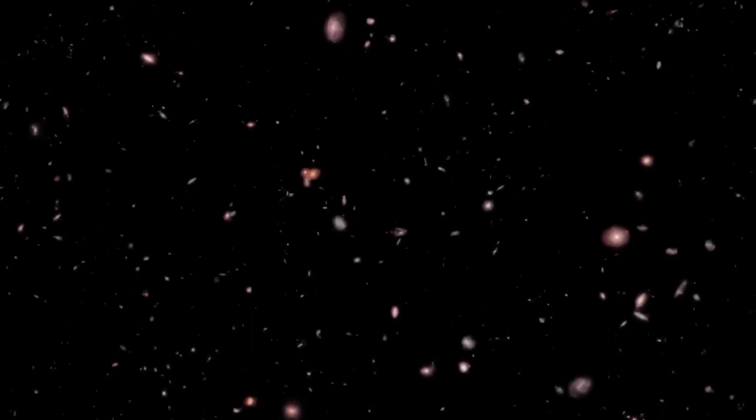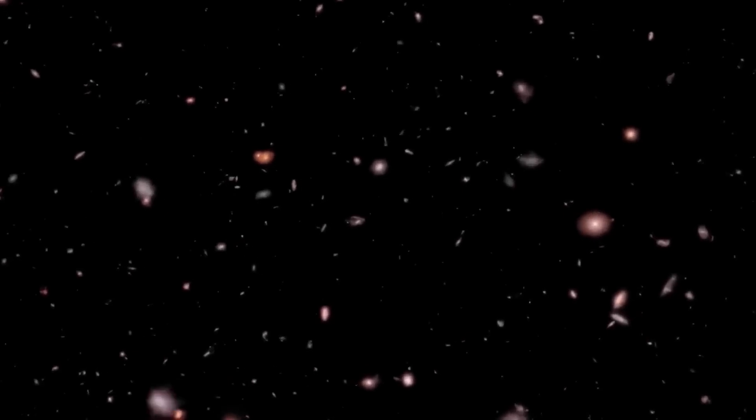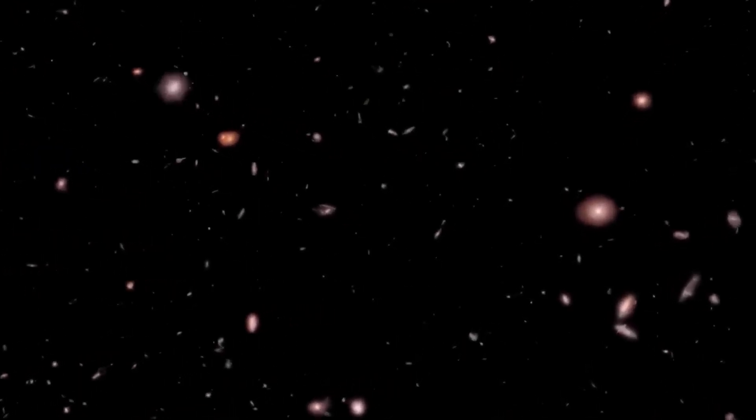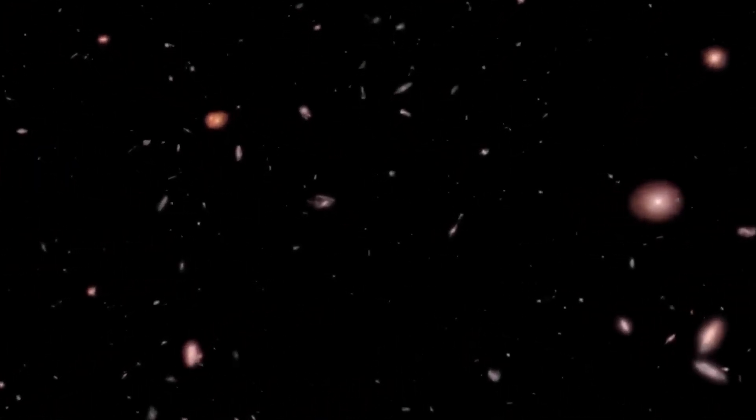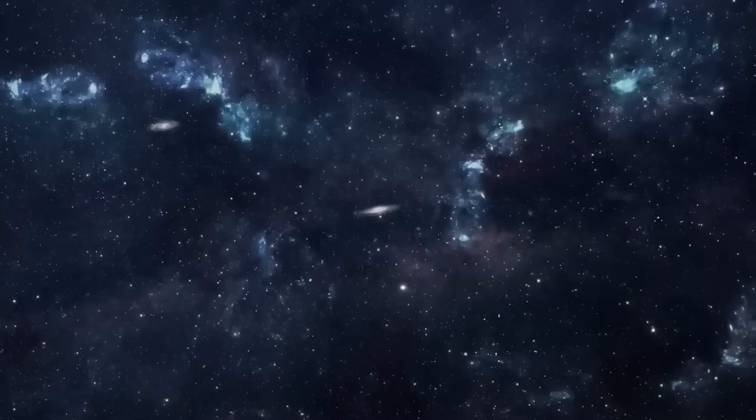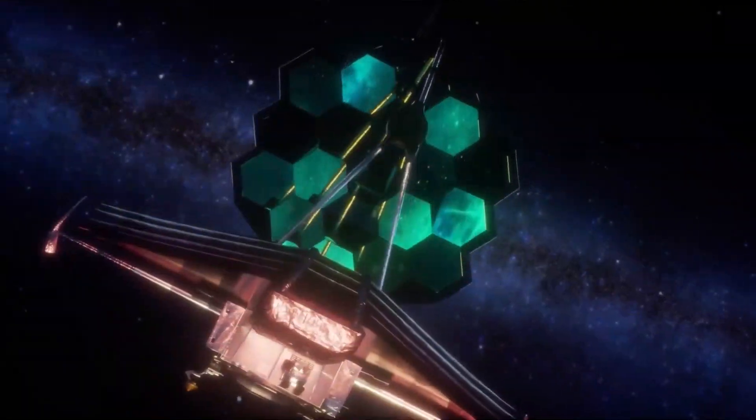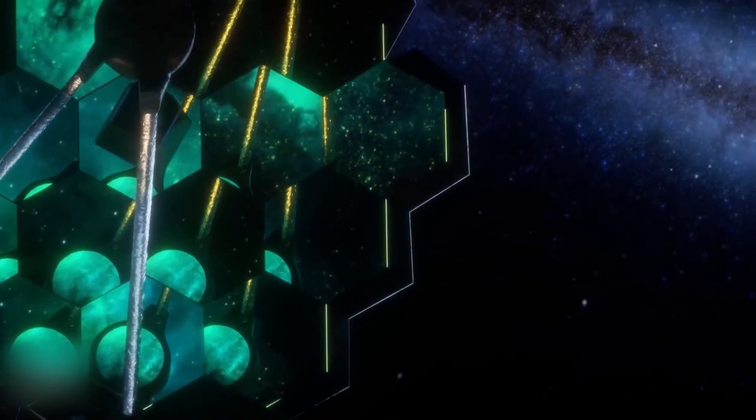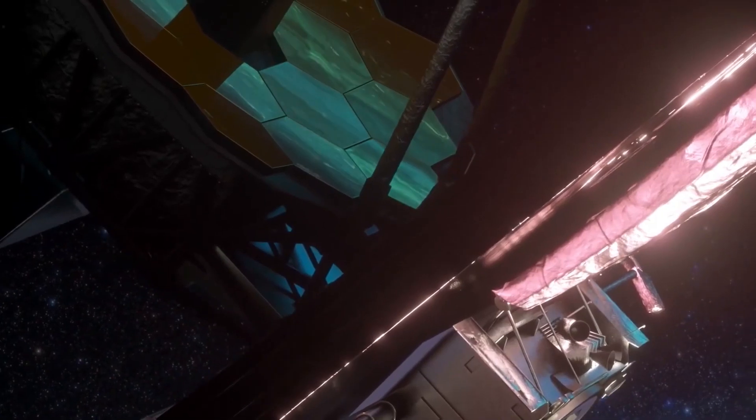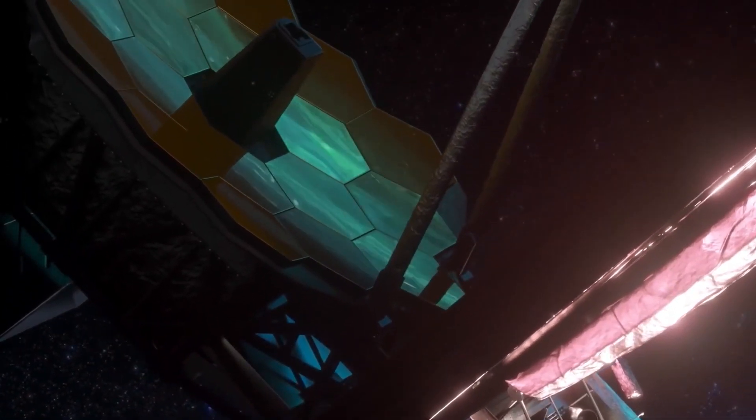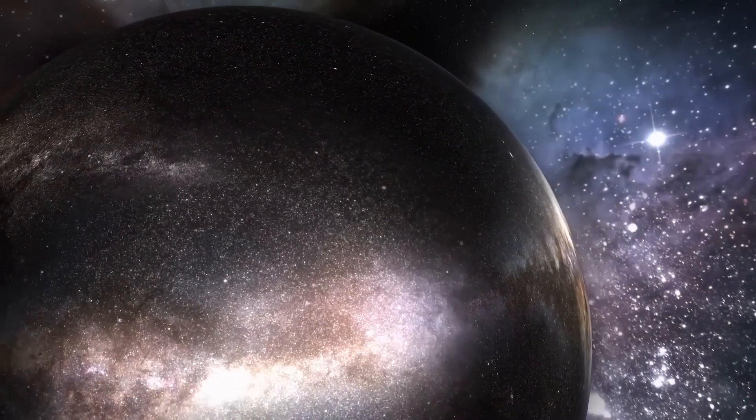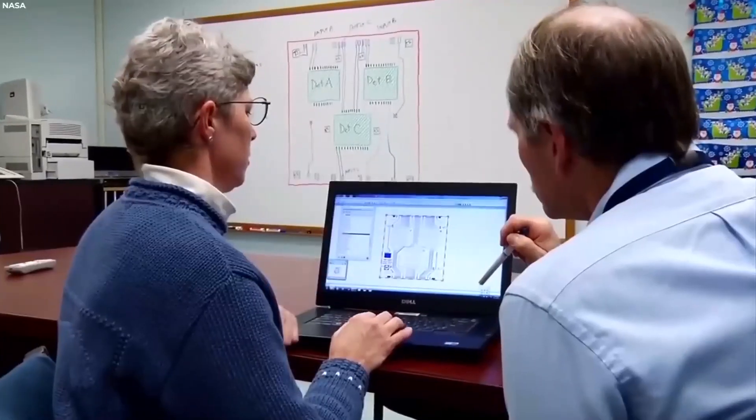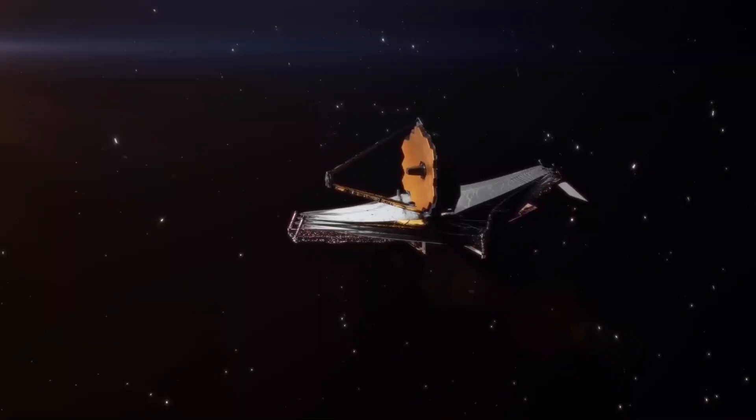So far, we have explored some theories about the edge of the universe, but now we are going to focus on an extraordinary tool that has the potential to provide new information about this topic: the James Webb Space Telescope. This impressive telescope allows us to look back in time and discover unexpected objects from the early days of the cosmos. Thanks to its advanced capabilities, astronomers have been able to observe the beginnings of the universe.